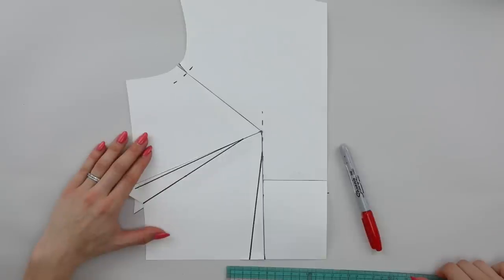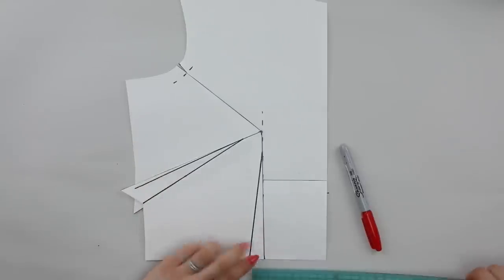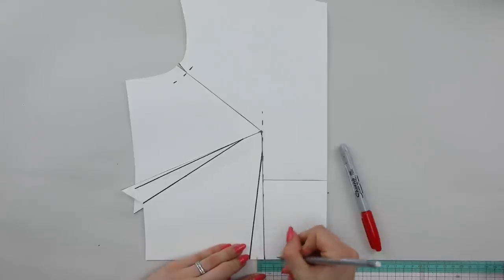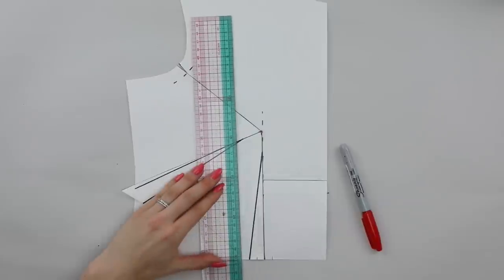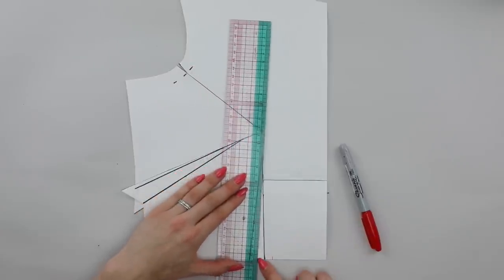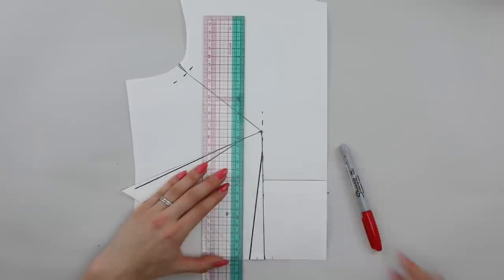Now we're going to distribute it either side of that green line so that the bulk of the dart is distributed evenly either side of that green line. And I'm going to plot a point on either side, and then I will simply reconnect my dart legs from the base at the waist up to the dart point.